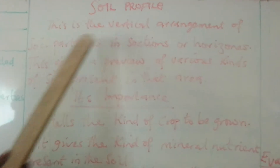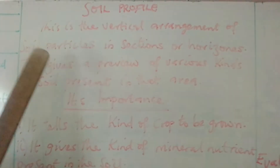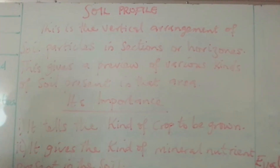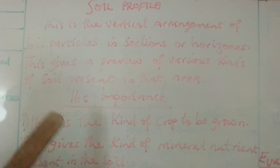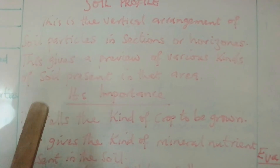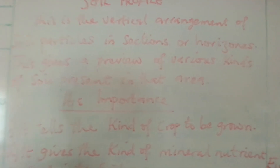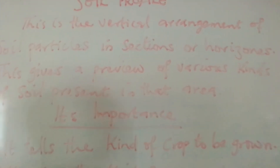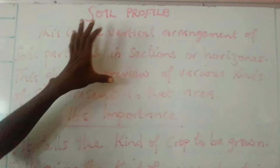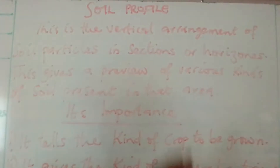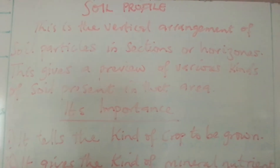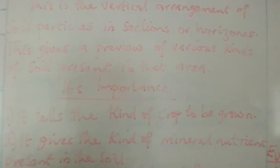Soil profile. This is a particular arrangement of soil particles in sections for various reasons. When you look at it, it gives a preview of various kinds of soil present in that area. When you look at soil profile, you discover it shows how the soil is positioned as you go down into the earth.